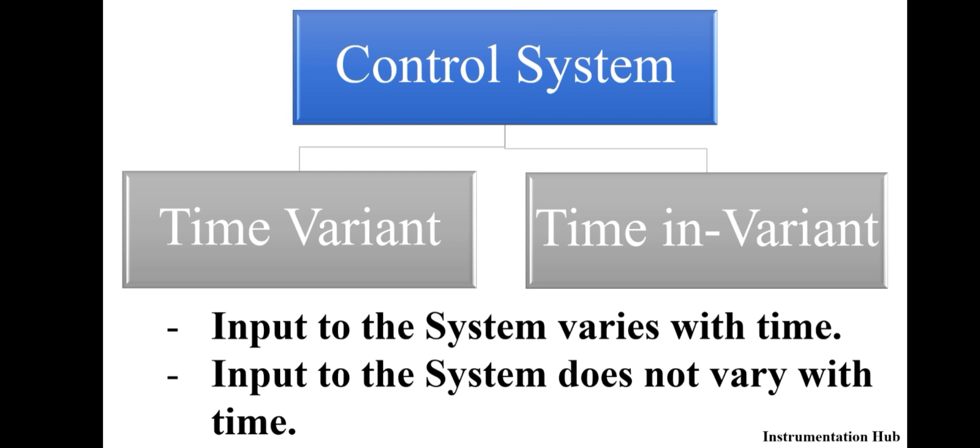Let's take an example of a water level indicator. Can you guess what kind of system it is? Yes, it is a time-variant system. Why? Let me tell you. In this example, the level of water is going to increase or decrease after some time. It means the parameter or the level of water is changing with respect to time. That's why it is a time-variant system.